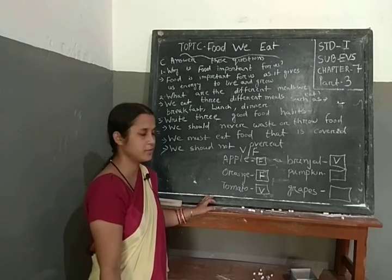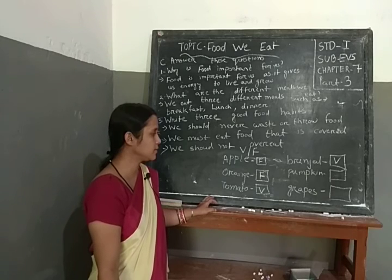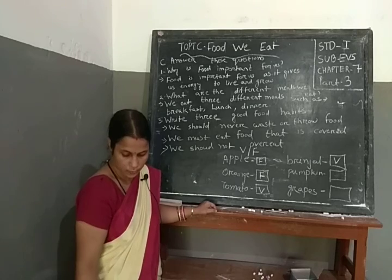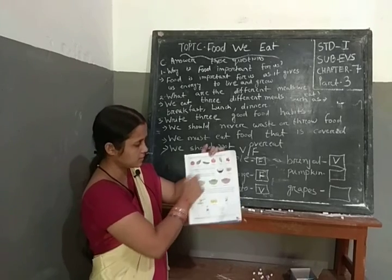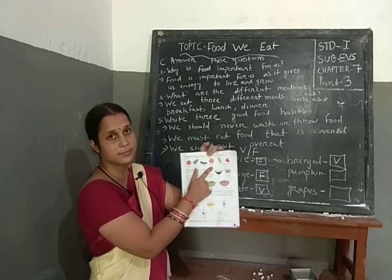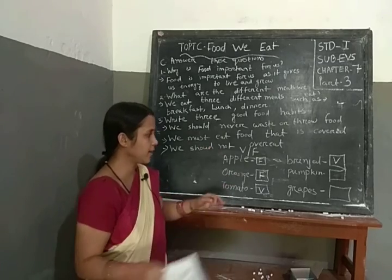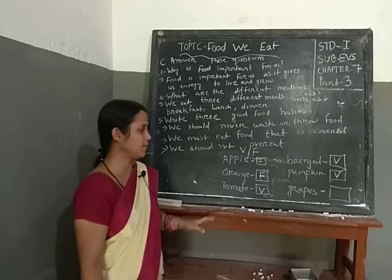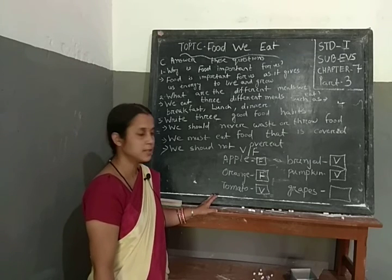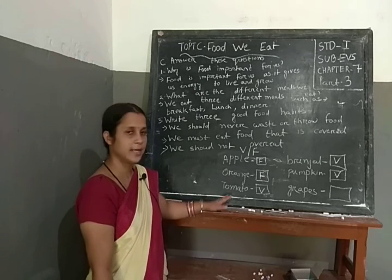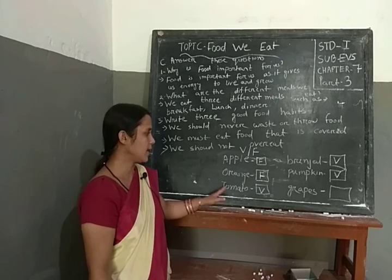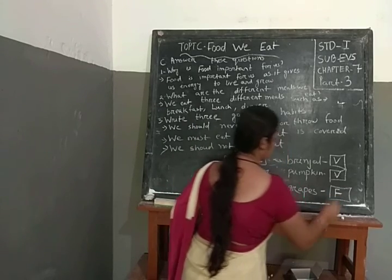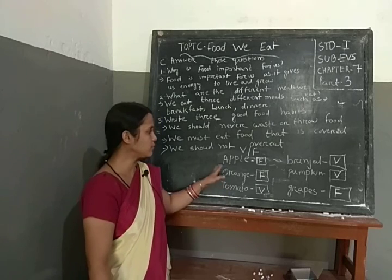Next, pumpkin. Is pumpkin a fruit or vegetable? Look at your books — this is a pumpkin. Pumpkin is a vegetable. So write V for vegetable. Next, grapes. Grapes is a fruit. So write F for fruit.